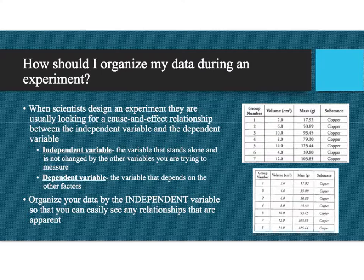Scientists, when they design an experiment, they're going to look for a cause and effect relationship between the independent and the dependent variable. The independent variable is the variable that stands alone and is not changed by any other variables that you're trying to measure.